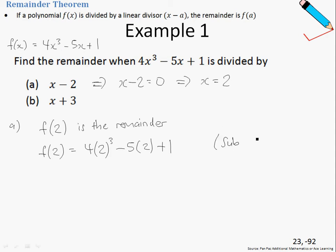Let me perform the substitution for you. So I'm substituting x equals 2 into f(x). If we simplify this we arrive at 23. Therefore, 23 is the remainder.